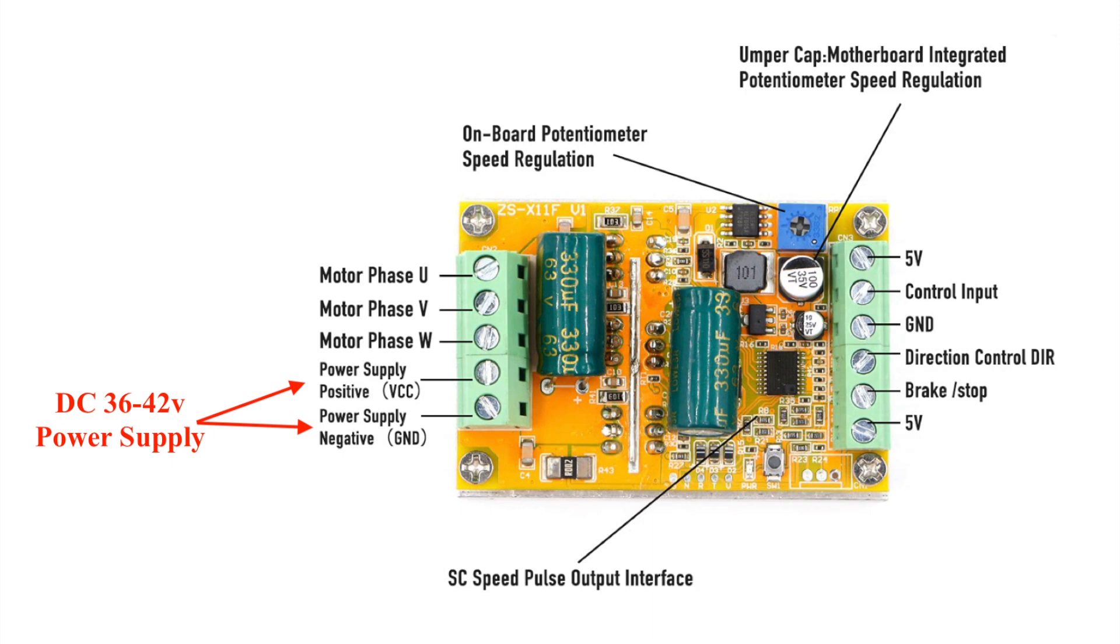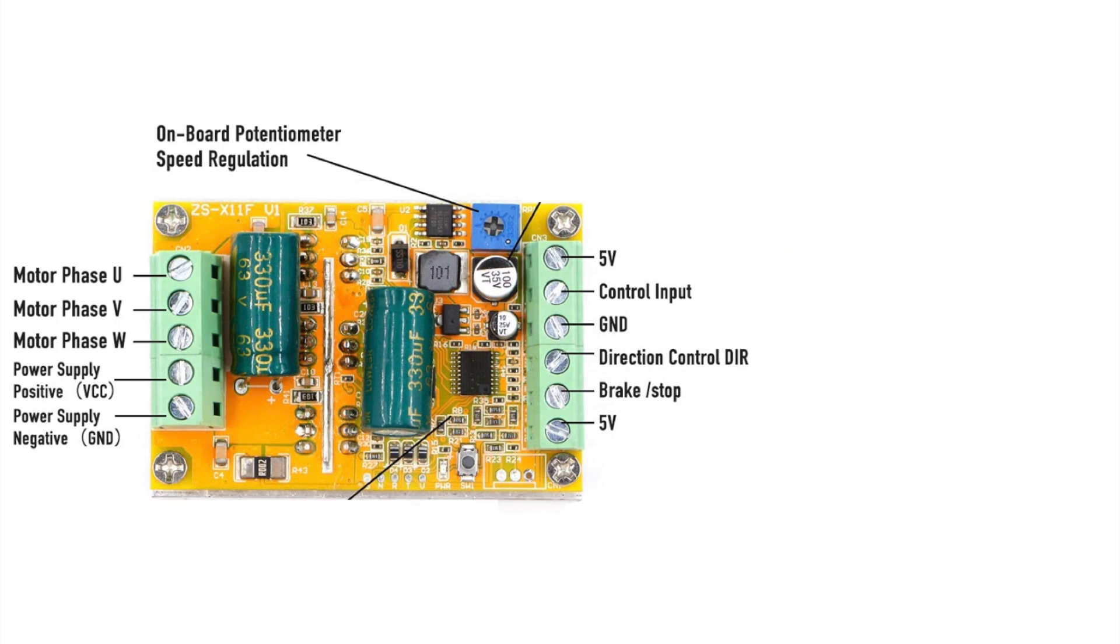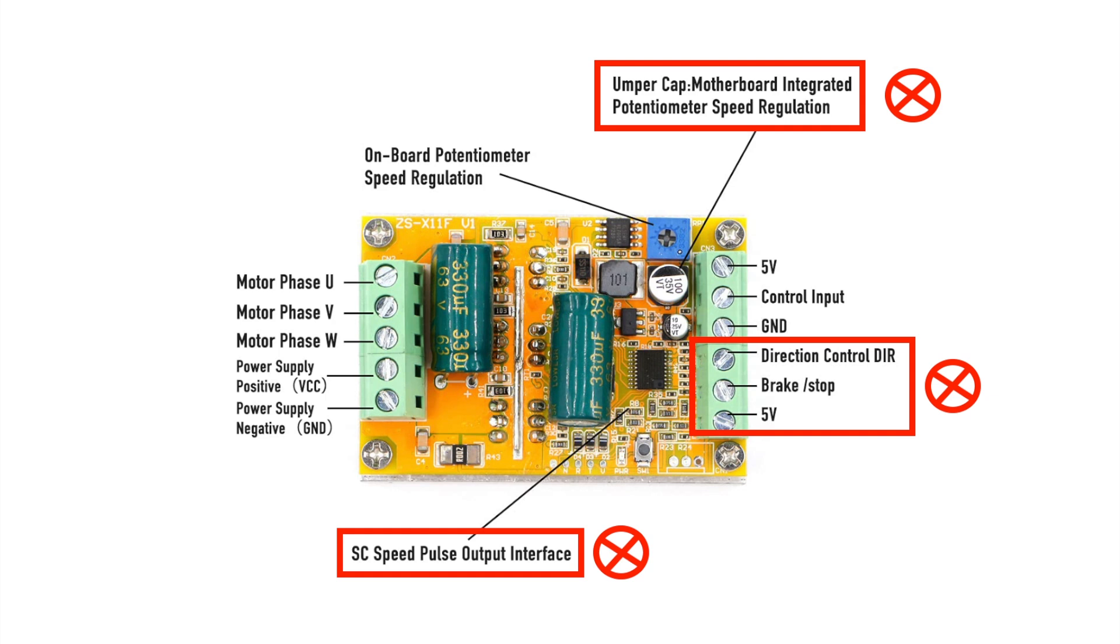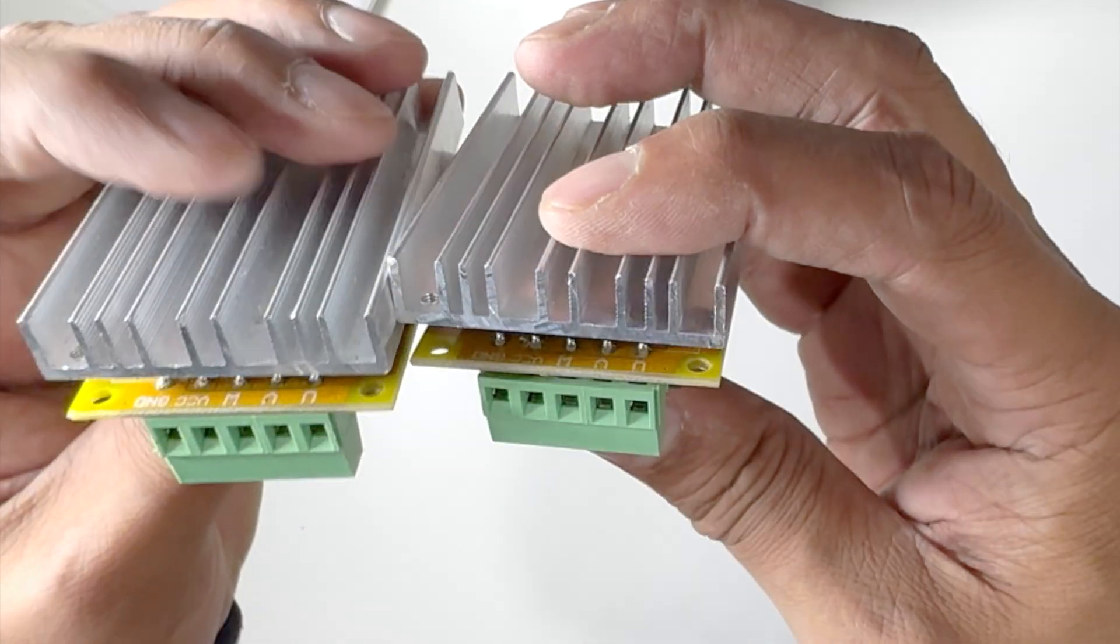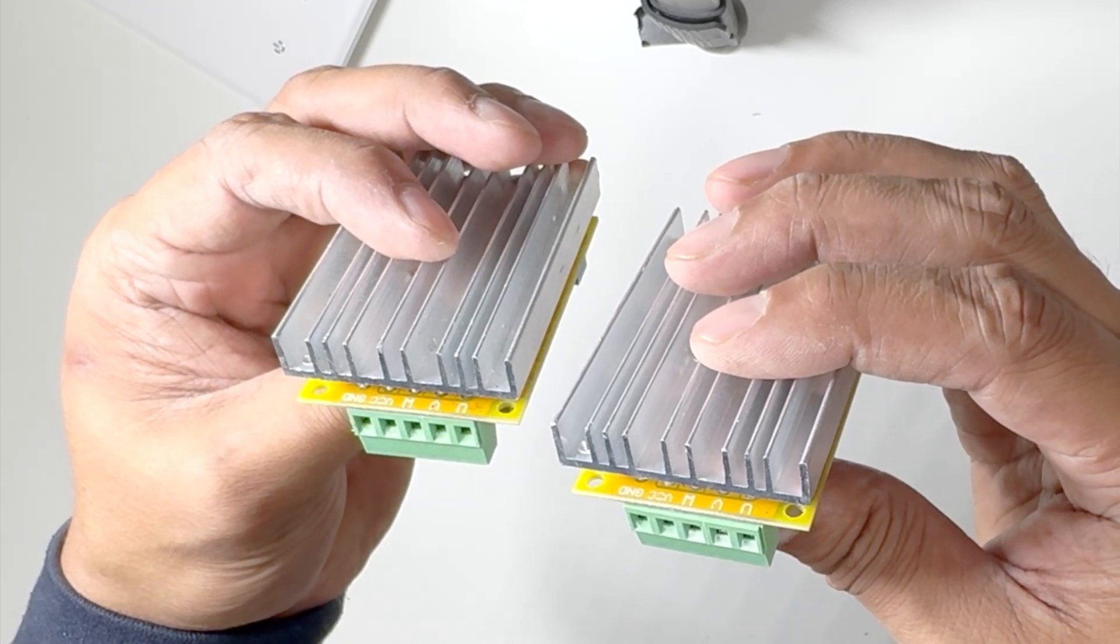This controller board has an onboard potentiometer which can control the speed of the hub motor, but you can also connect an external potentiometer to these highlighted slots. Remember to turn the onboard potentiometer knob to zero when you are controlling from an external potentiometer. There are some extra slots for the rotation direction control along with an electronic brake, but in this project we are not going to use them. The final part of the controller is the heat sink, which is used to keep the controller circuit safe from overheating.